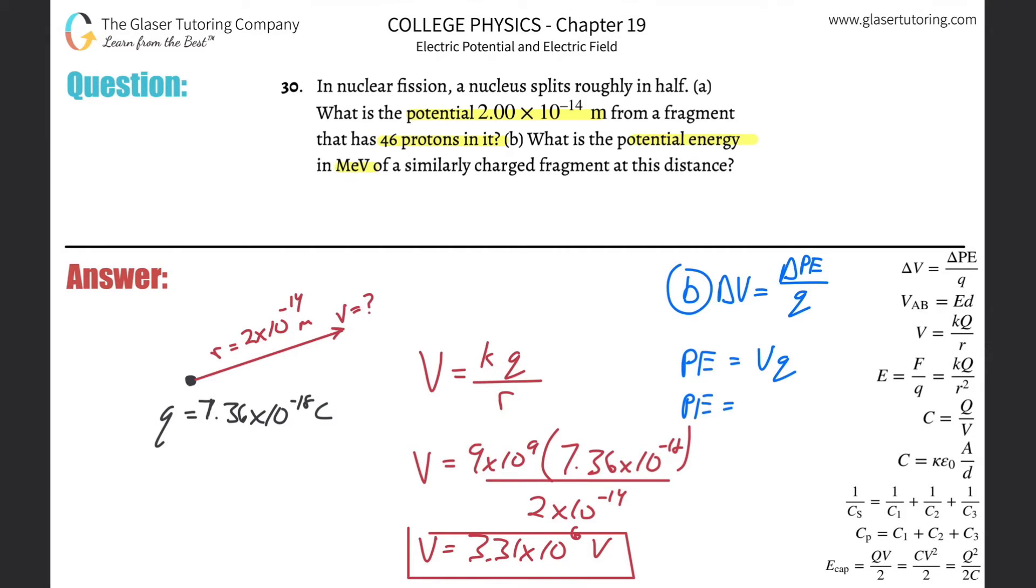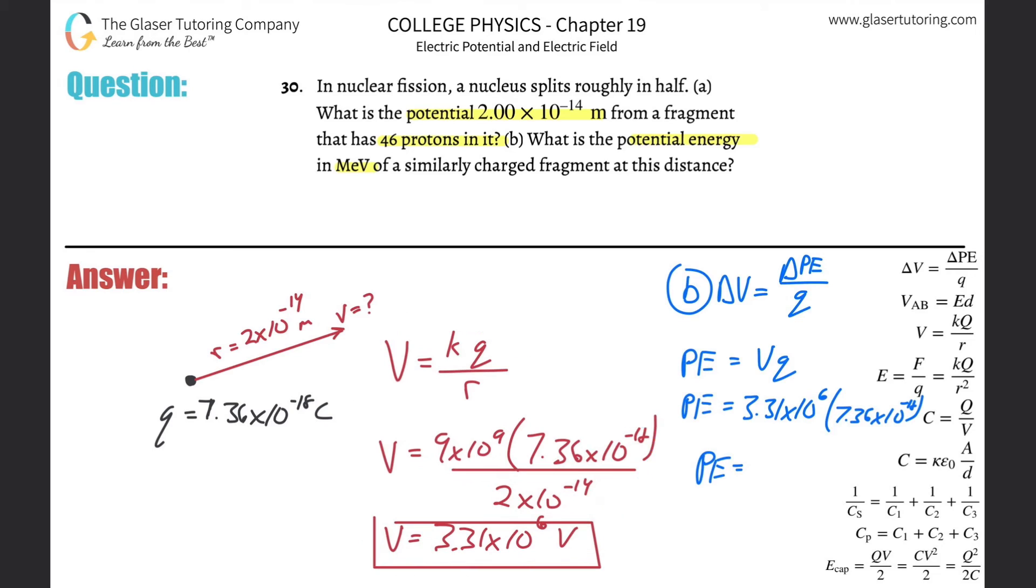And now all we need to do is plug in that voltage of 3.31 times 10 to the sixth volts, then multiply by the charge. Running out of space there a little bit. So this would be the charge, 7.36, 7.36 times 10 to the minus 18th. And what do we get? The potential energy here is going to be, let me just see if I can move this over a little bit. The potential energy now is going to be times 7.36 times 10 to the minus 18th. And here we get now 2.44 roughly times 10 to the minus 11th. And that's in terms of joules.